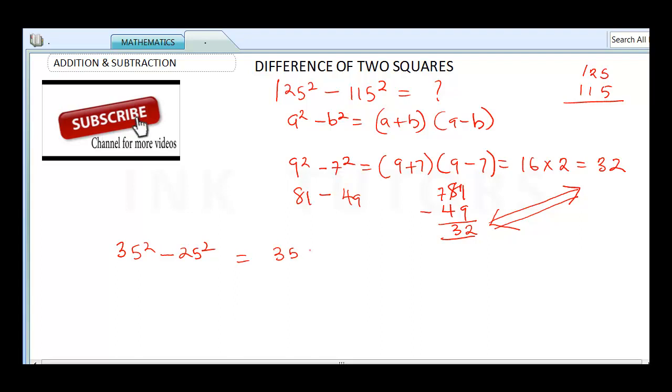You just do your 35 plus 25 multiplied by 35 minus 25. This will give us, 35 plus 25 is going to give us 60. 35 minus 25 will give us 10. And as easy as that, your final answer is 600.